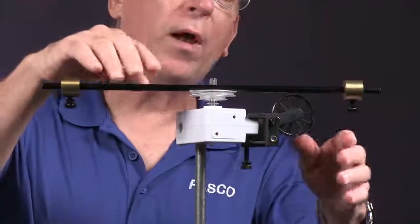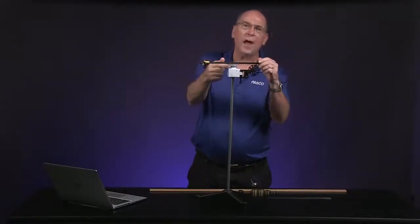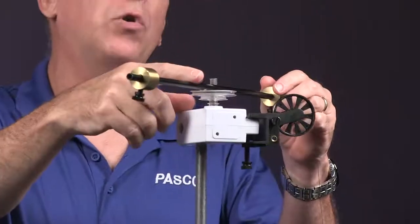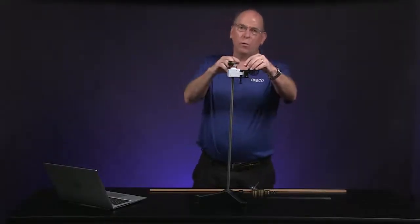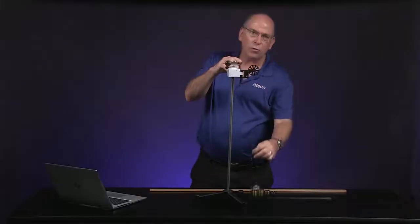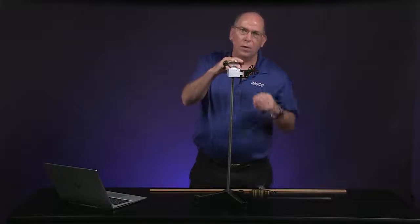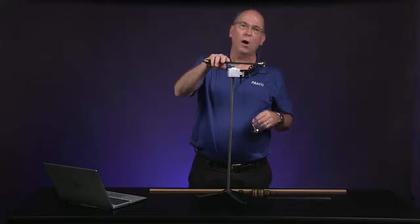We wound a string around this pulley that is connected to the axle of the rotary motion sensor. This allows us to apply a torque to the axle. The string goes over a second pulley that is attached to a falling mass.